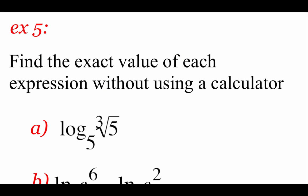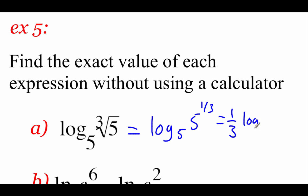In these next examples, we're going to simplify to find exact values without a calculator. For log base 5 of the cube root of 5 — remember, a cube root is a one-third power — so we rewrite as log base 5 of 5 to the one-third power. The power property lets us bring the one-third down in front, giving one-third times log base 5 of 5. Since the number equals the base, log base 5 of 5 is 1, so one-third times 1 gives us one-third.